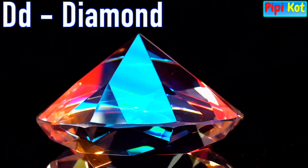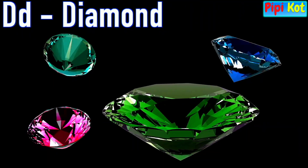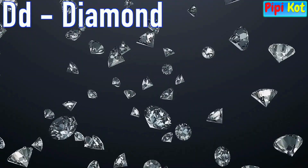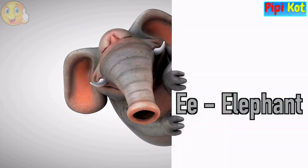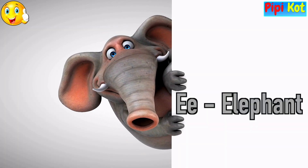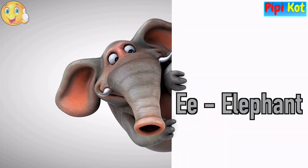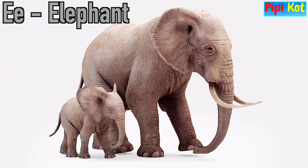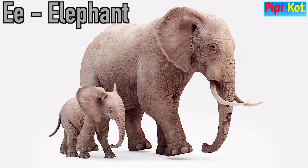Candy. D is for Diamond. D, D, Diamond, D, Diamond. E is for Elephant. E, E, Elephant, E, Elephant, E. Elephant.